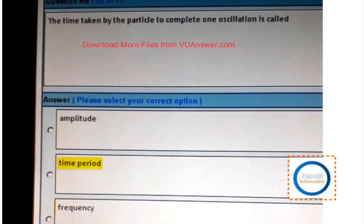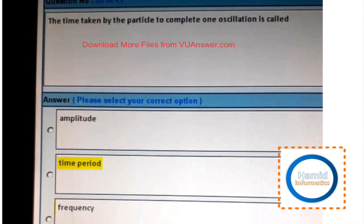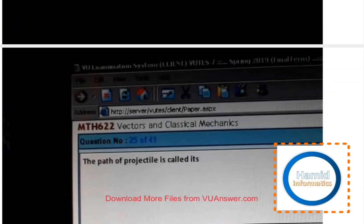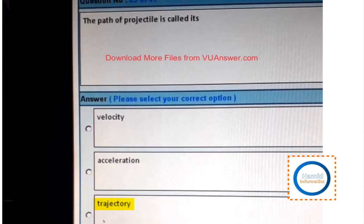The time taken by a particle to complete one oscillation is called time period. The path of a projectile is called its trajectory.